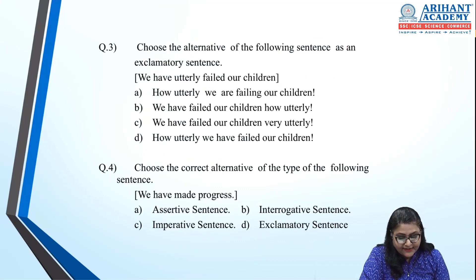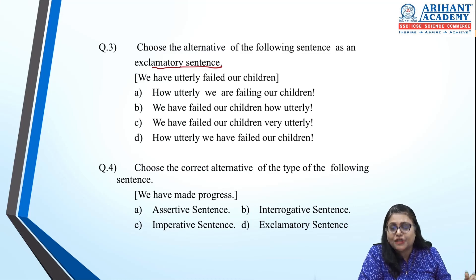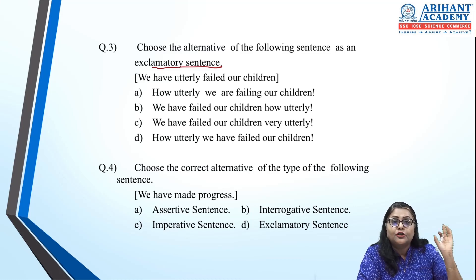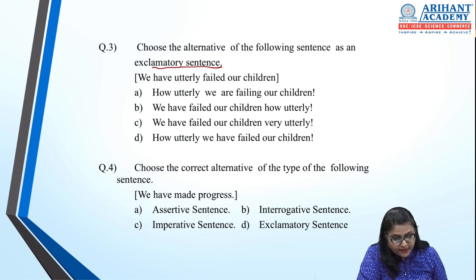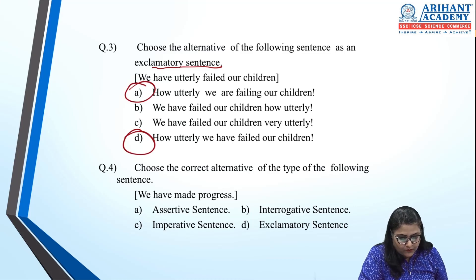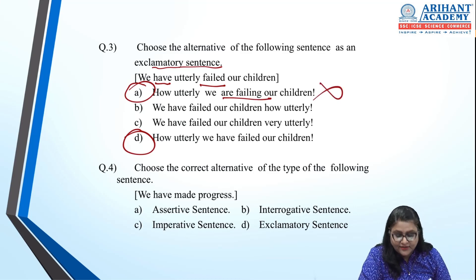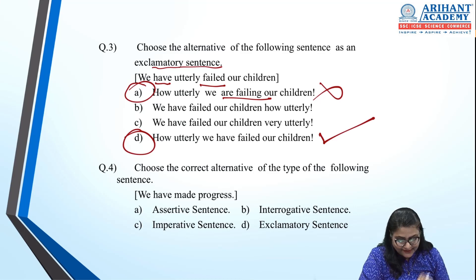Third: change to exclamatory. The sentence is 'We have utterly failed our children.' In an exclamatory sentence, we give importance to emotion. If no article is given, begin with 'how.' Two options begin with 'how' — check the tense. The tense is 'have failed', so use the same tense. 'How utterly we have failed our children' — option D is correct.